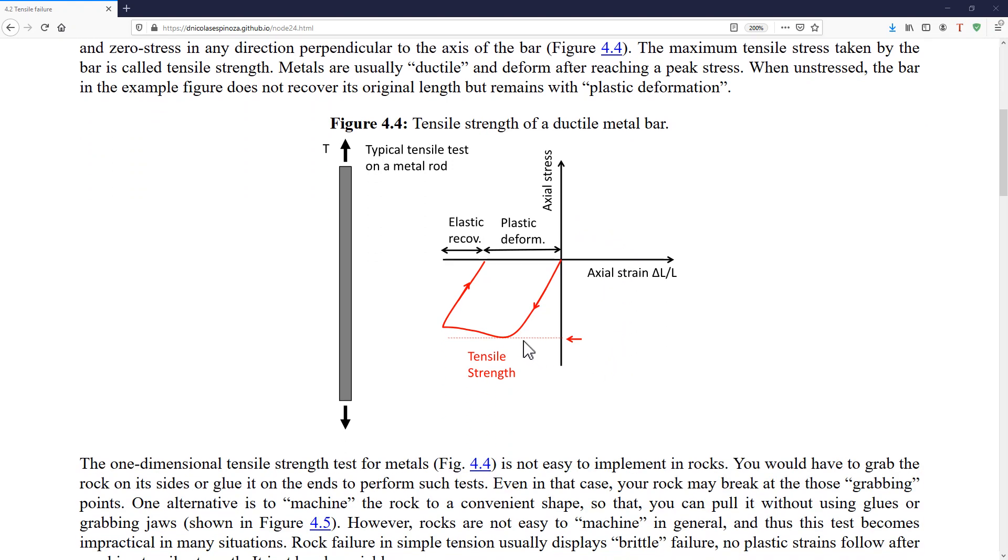For example, you may be familiar with a typical test of tensile failure of a rod of a metallic material. In this type of test, which is called a direct tension test, we apply stresses which produce tension in the rod, and as we increase that axial stress, in this case negative because we're using the geomechanics convention, the rod is going to extend, and that's also negative, so we are in the negative quadrant in this case.